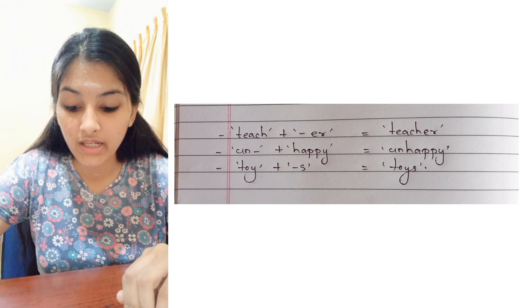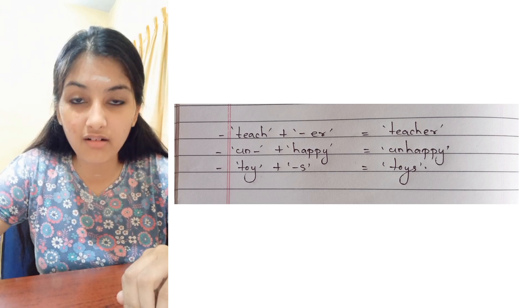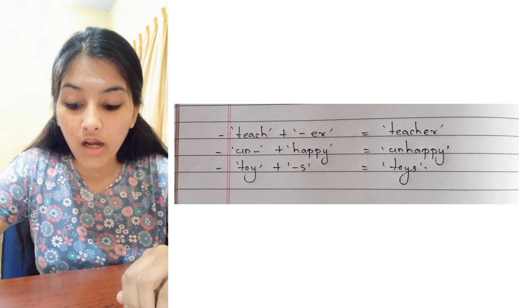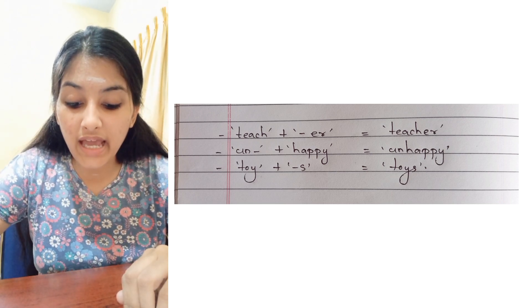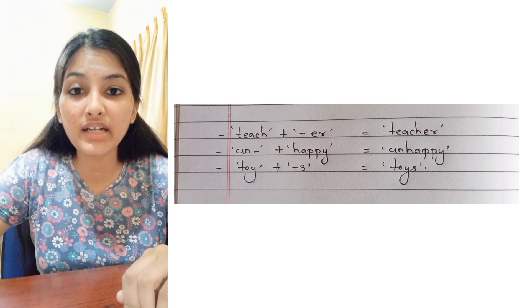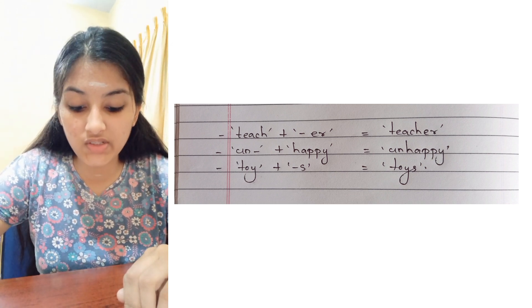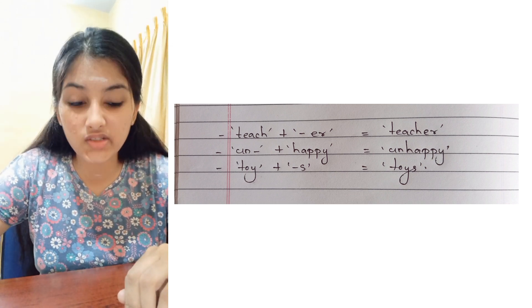Let us have a look at certain words which are combinations of free and bound morphemes: teach + er = teacher; un + happy = unhappy; toy + s = toys.